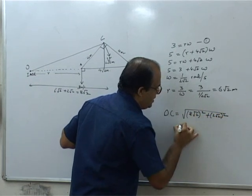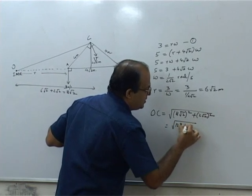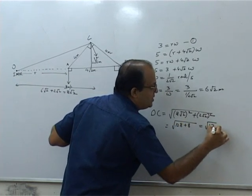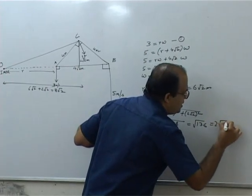So (8√2)² plus (2√2)². This is 64×2=128 plus 8, that is √136. We can write this as 2√34 meters.